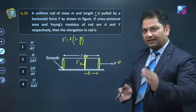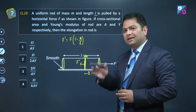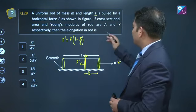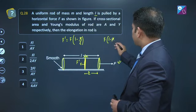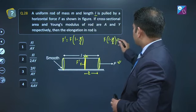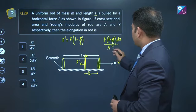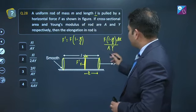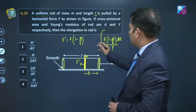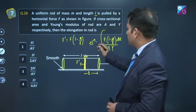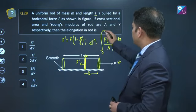Toh d x elongation nahi hai, d x segment par kitna elongation ho ga, that very small elongation. That will be f which is 1 minus x by L into length which is d x divided by a multiplied by y. Yeh hame kya de raha hai? Elongation for this particular segment. Or total elongation yeh ban jaega. The total elongation is this much. Integration limit from 0 to L.